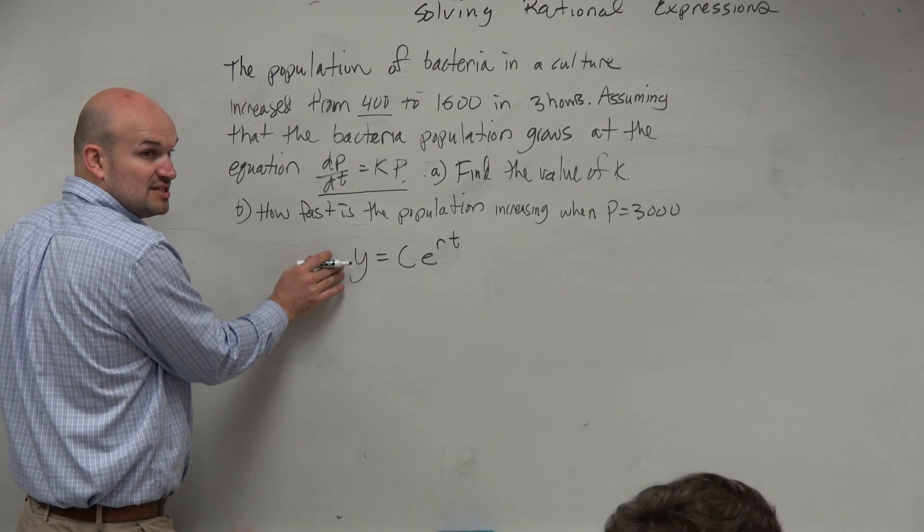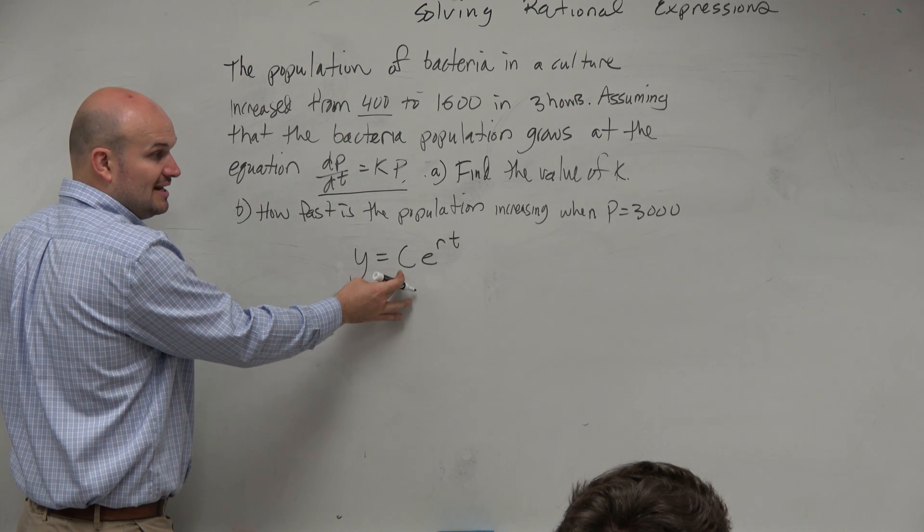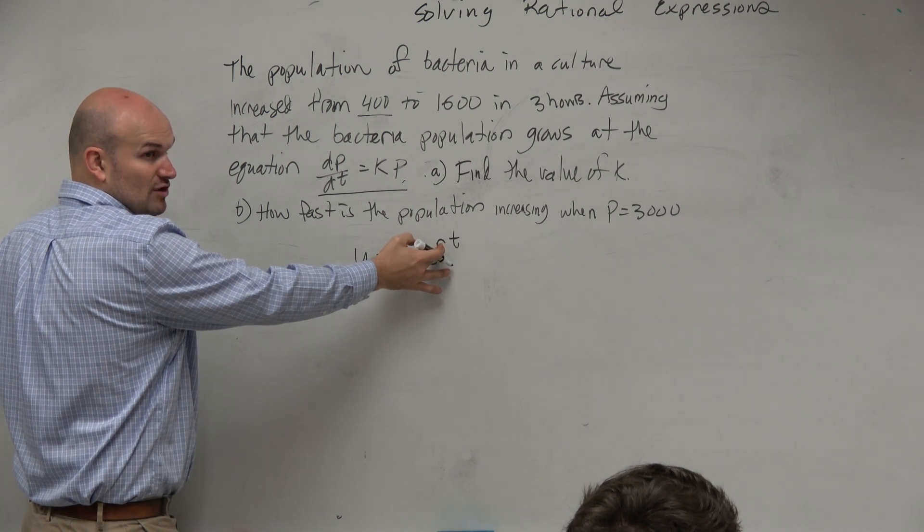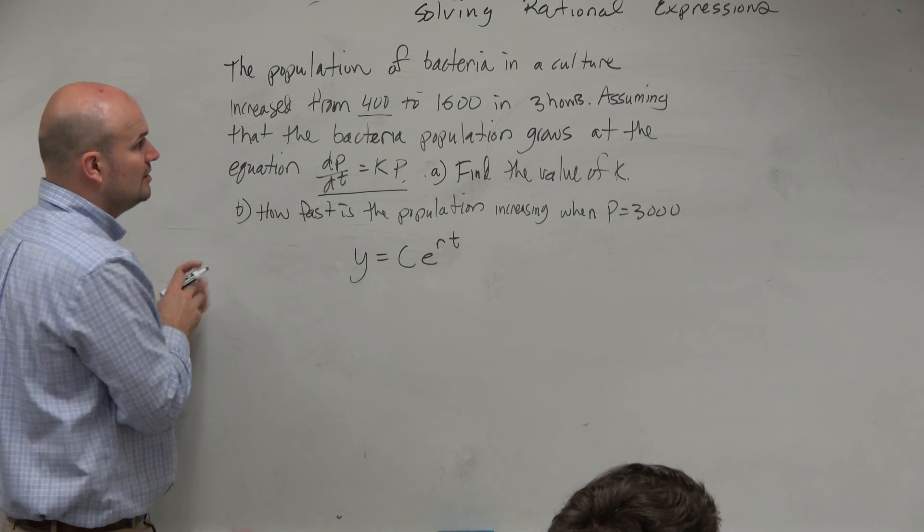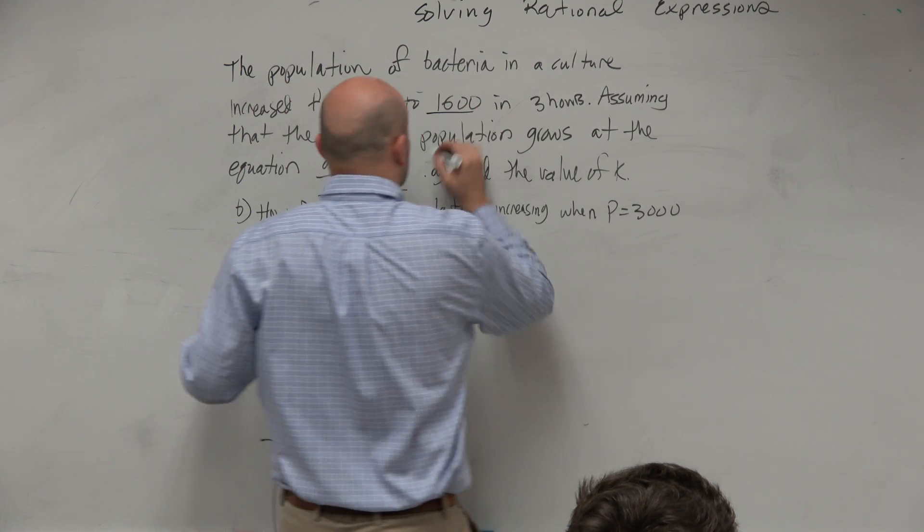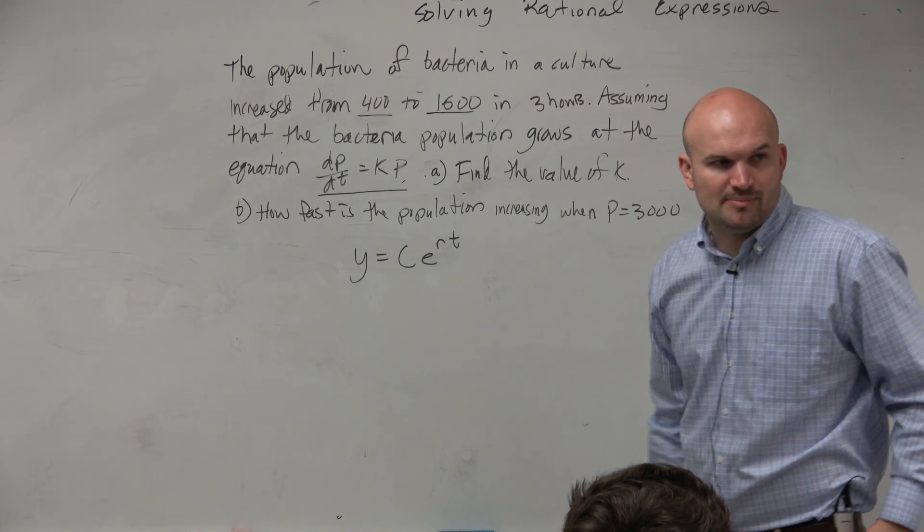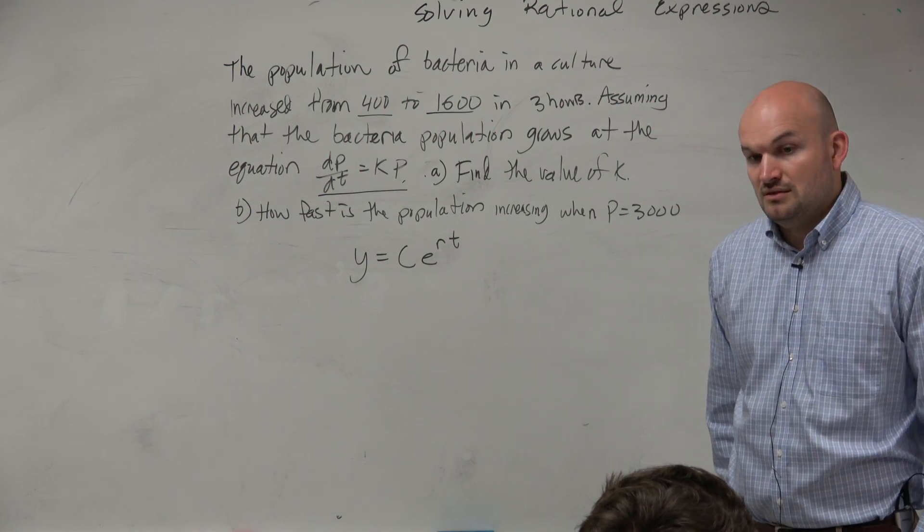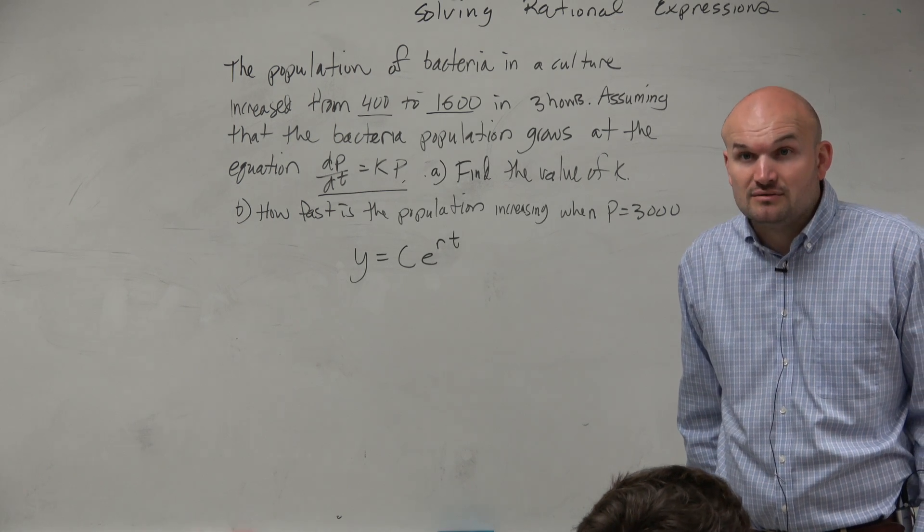And remember, y was my final amount, c was my initial, r is my rate, and t is time. So 400 and 1,600, what do we feel like those could represent? Initial. Yeah, like my initial and my final, right? Wouldn't you guys agree?